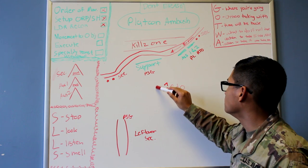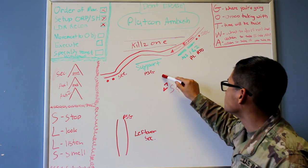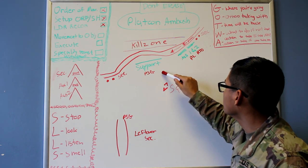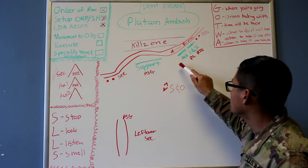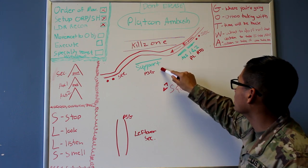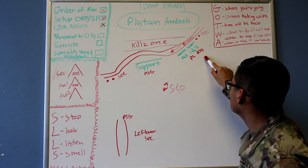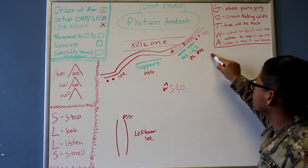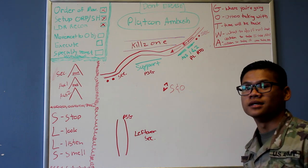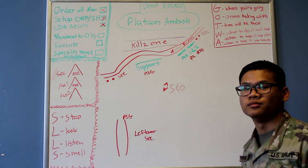After they hit the SNO team, the PL will establish where the support line will be and the assaulting element. The PSG will stay behind the support element as the PL and the RTO will stay with the assaulting element, and that will be movement to the objective.